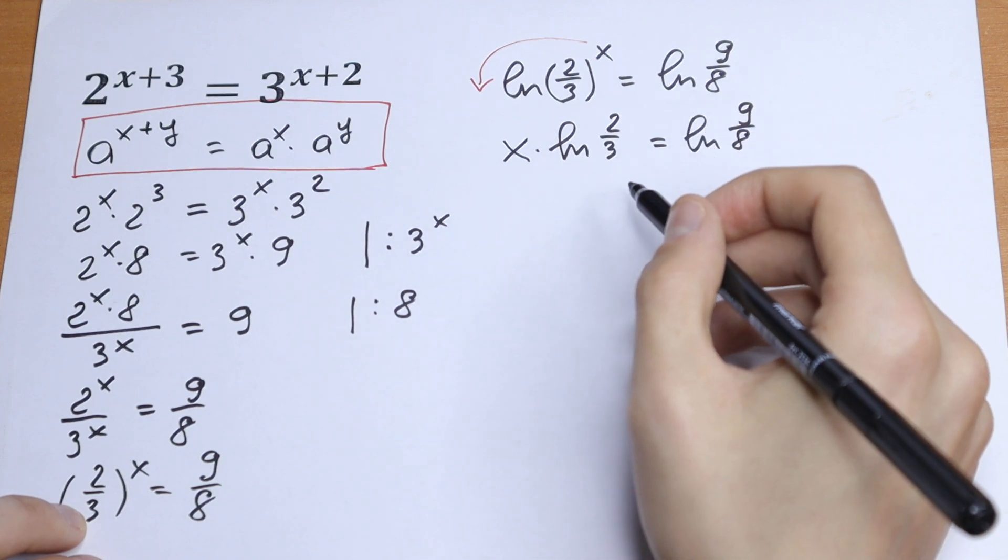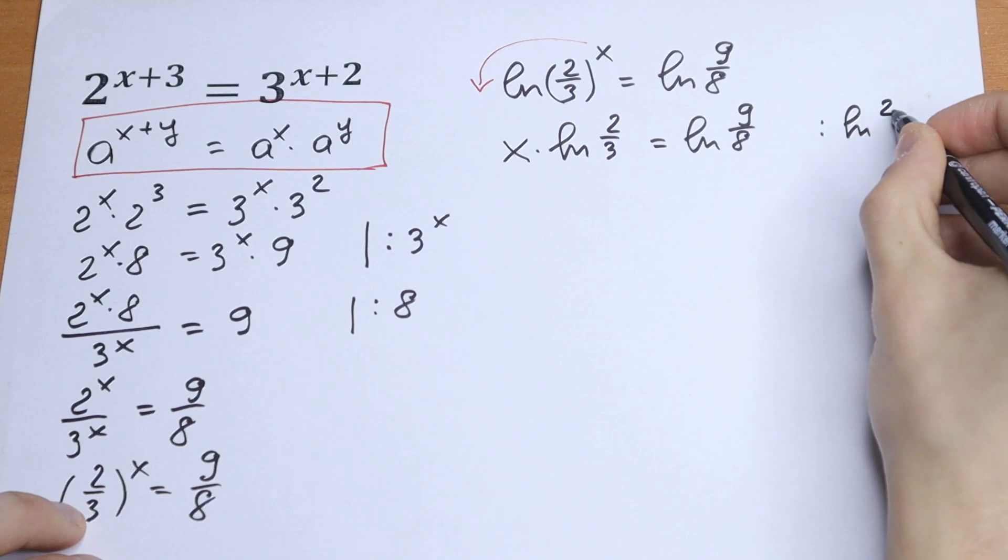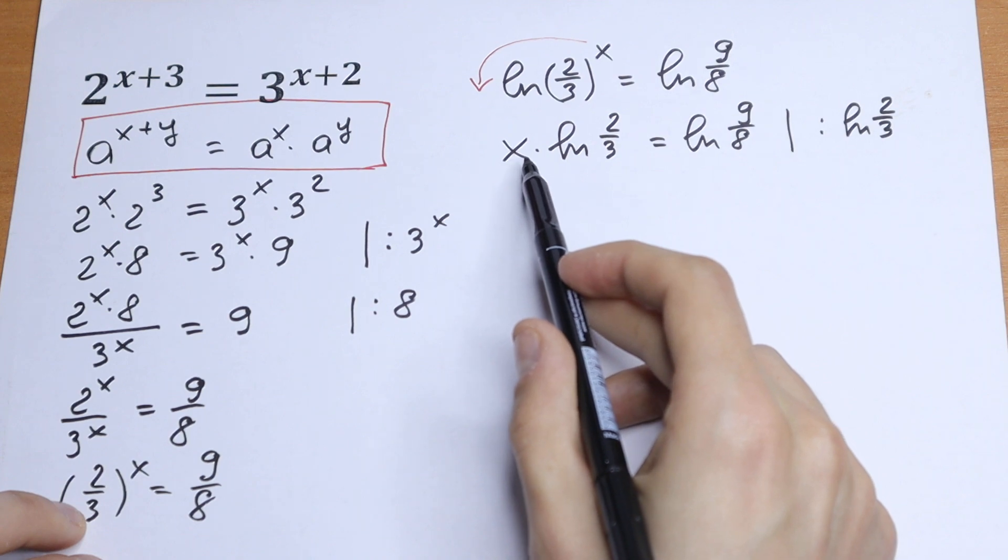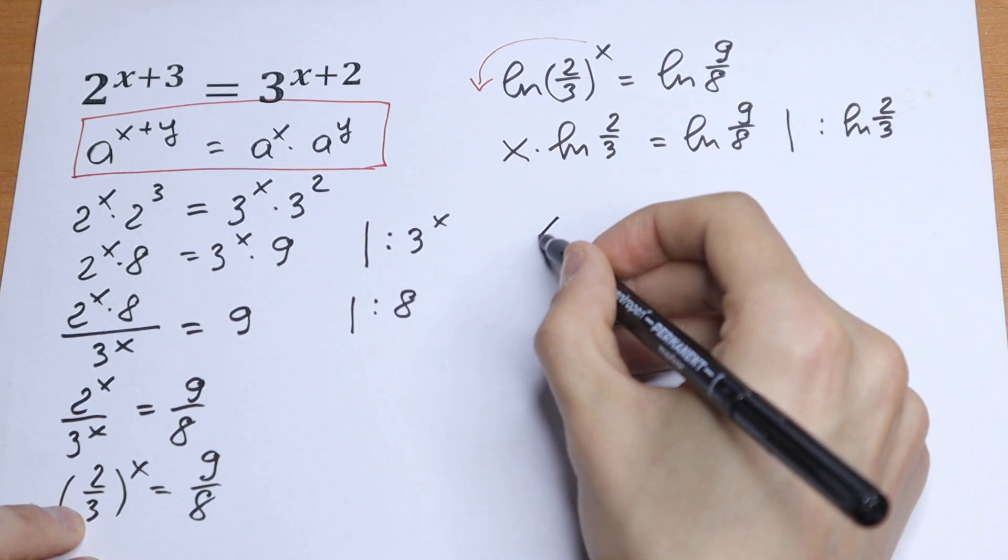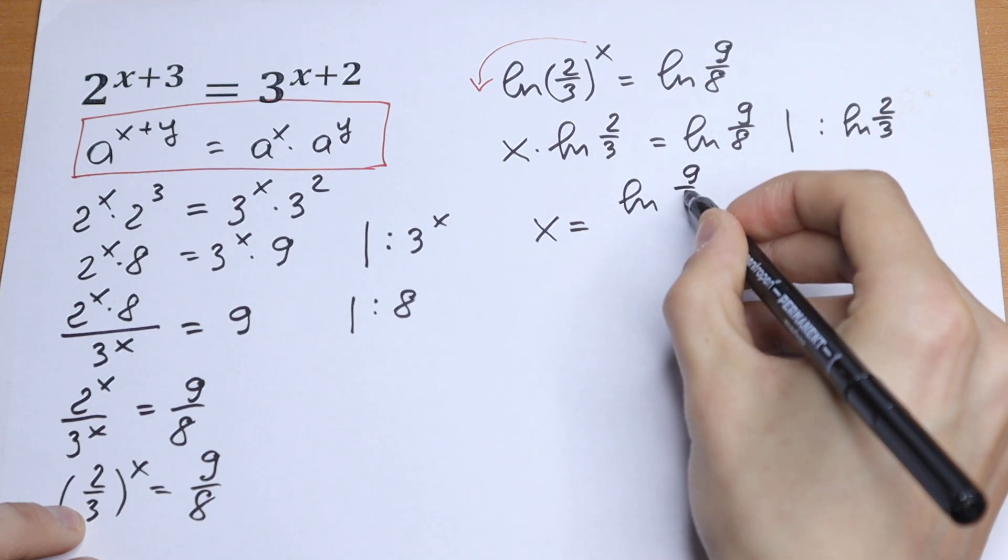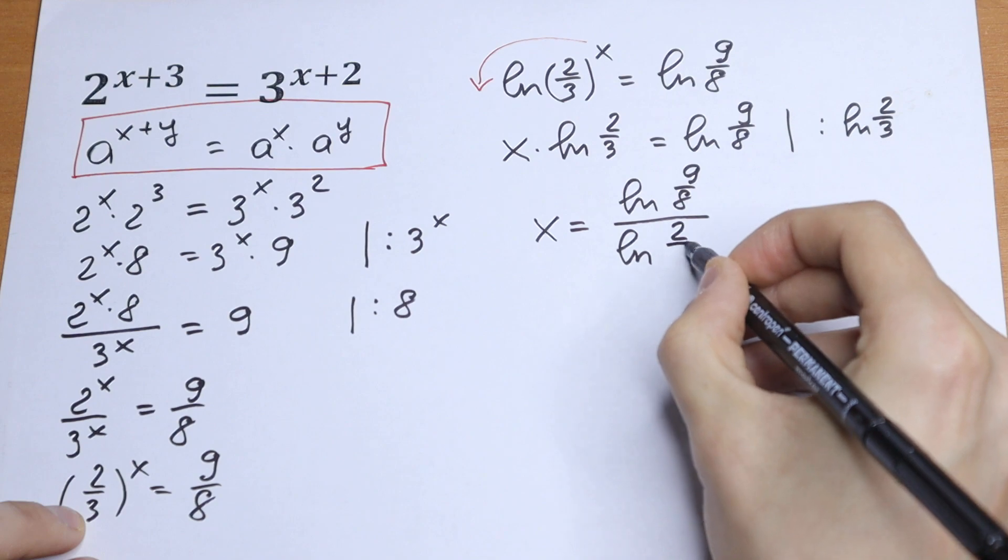The last step: dividing both sides by natural log 2 over 3 because we just need our x, only x. We'll have x equal to natural log 9 over 8 over natural log 2 over 3.